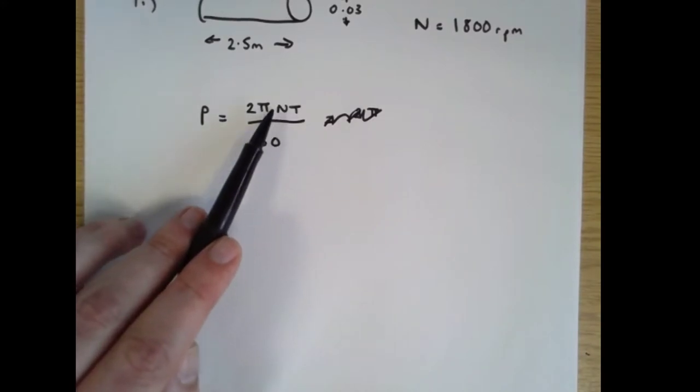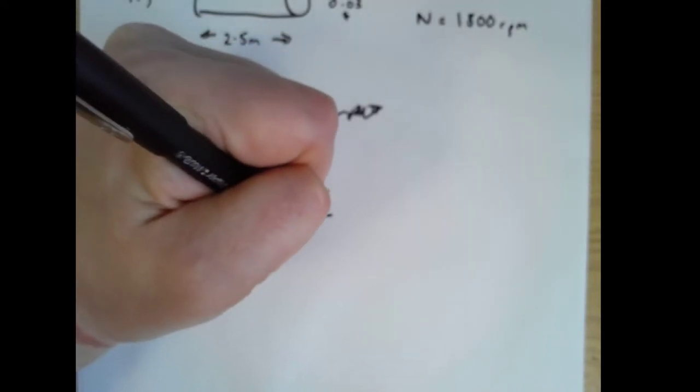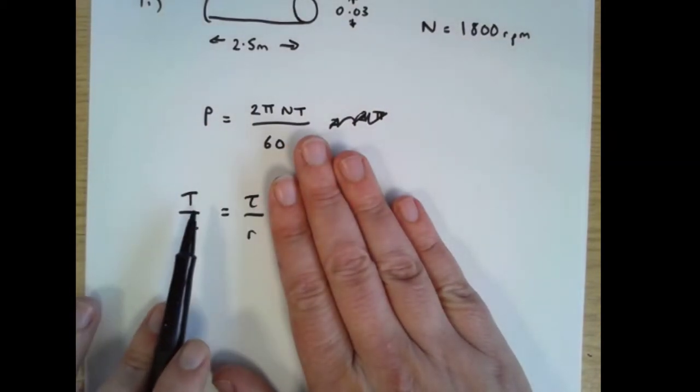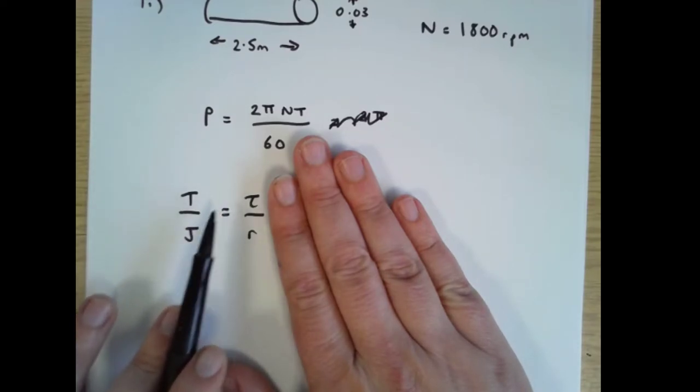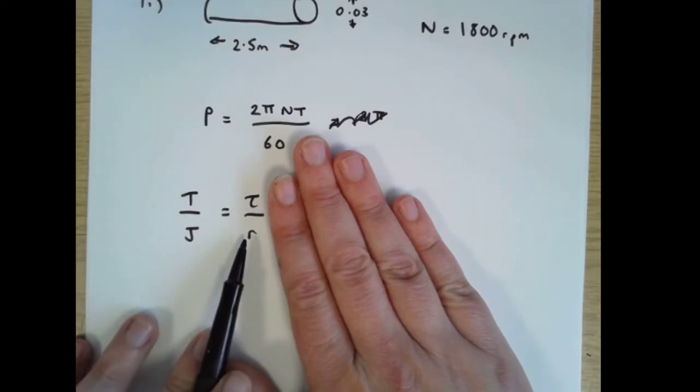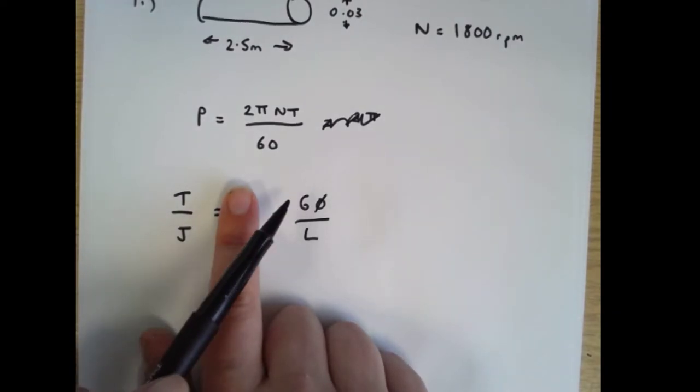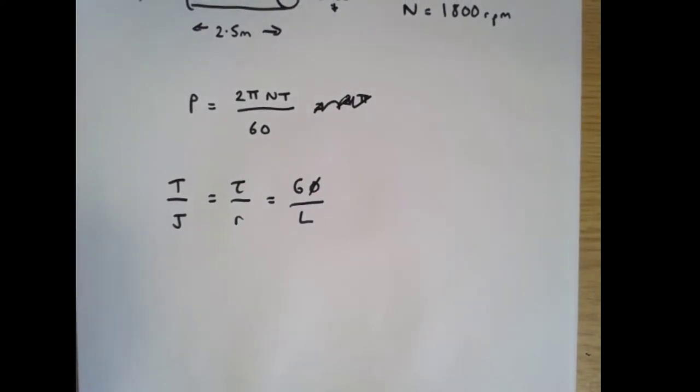So let's also write down the torsion equation: t over j equals tau over r equals g phi over l. I'll remind you that you can pick any pair here. You can say torsion divided by j equals shear stress divided by radius, or you can say torsion divided by j is shear modulus times twist angle divided by length. So we can have either of those and in fact we may need to do this.